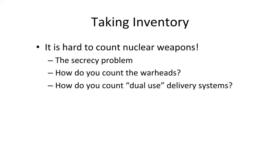On the face of it, taking inventory ought to be an easy task — you just start counting stuff. But when you start trying to count nuclear weapons, you encounter a lot of problems. The first challenge is secrecy. Some states are more forthcoming with their nuclear stockpiles than others, and so counting comes down to educated guesswork and intelligence estimates.